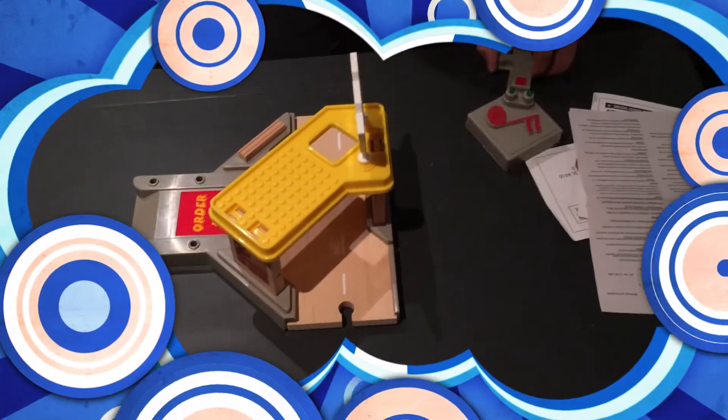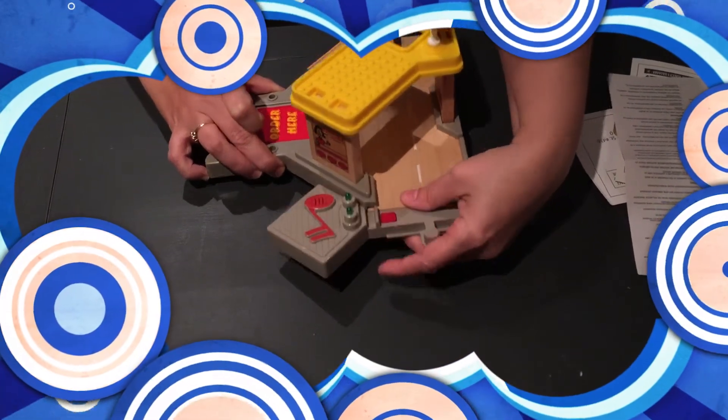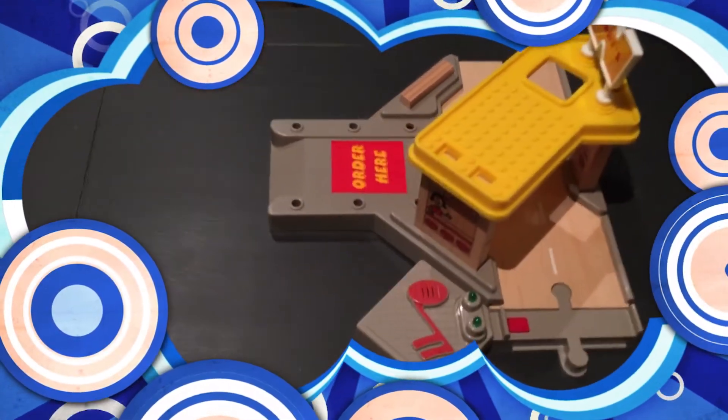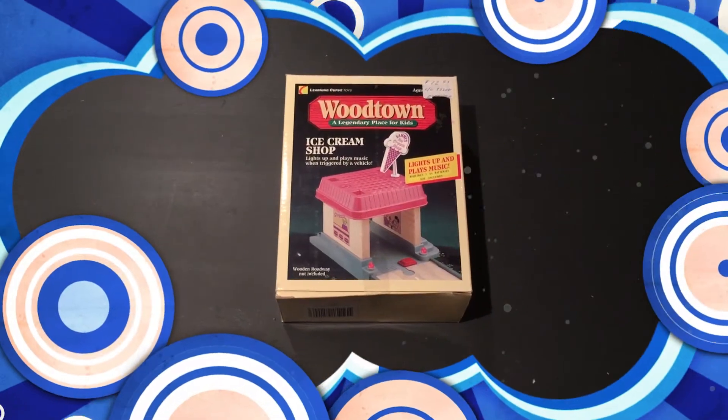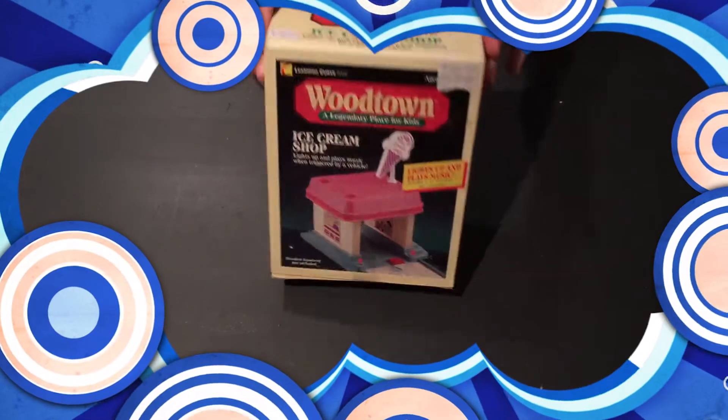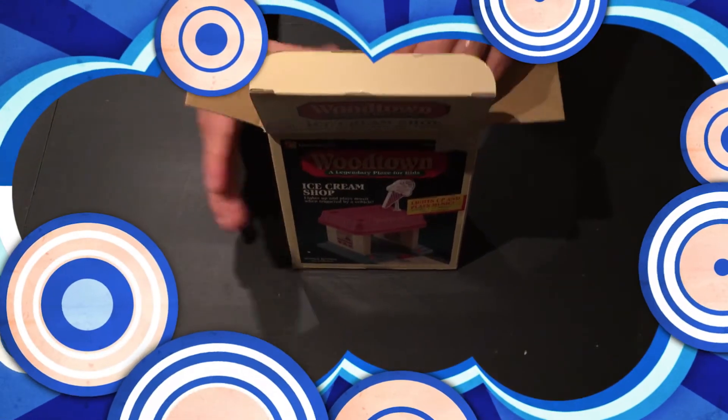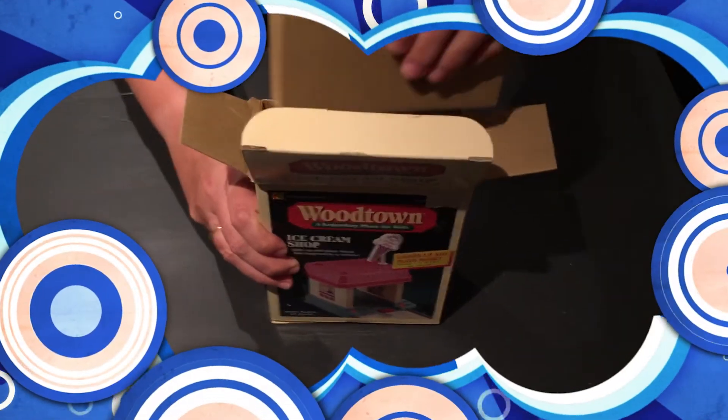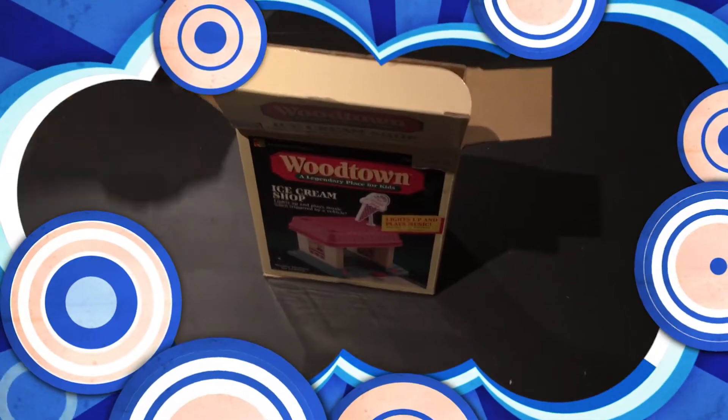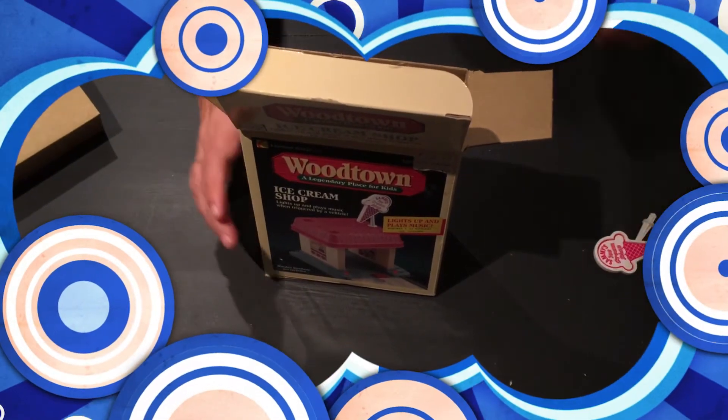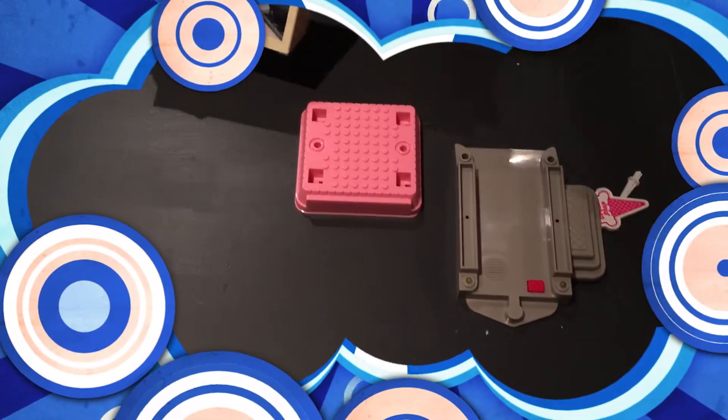And the musical part. All right, that is Woody's Burgers. Okay, next up we have Woodtown Ice Cream Shop. That's the ice cream sign. That's the main road into the ice cream shop. There's the roof.